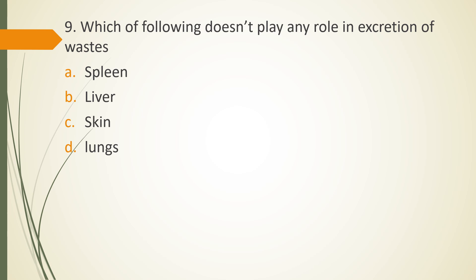Question 9. Which of the following doesn't play any role in excretion of waste? Spleen, liver, skin, lungs. The correct answer is option A. Spleen has no role in excretion of any waste. Liver plays its role, skin plays its role, lung has a role. However, spleen doesn't have any role in excretion of waste of body.